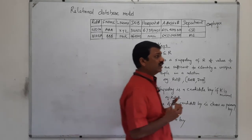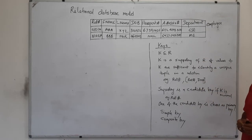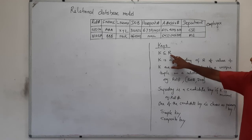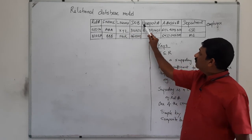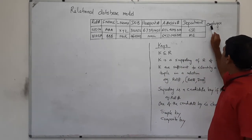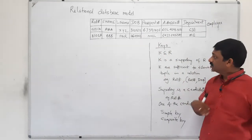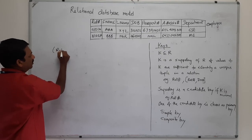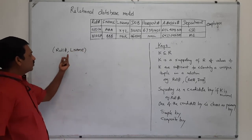Before having a detailed discussion of primary key, we need to discuss some terminology. First, what is a super key? Here, we have a relationship R containing attributes: roll number, first name, last name, Aadhar number, passport number, another number, and department — that means seven different attributes. This employee relationship has seven attributes. A super key is defined as a subset of these attributes. For example, roll number and last name together can form a super key.